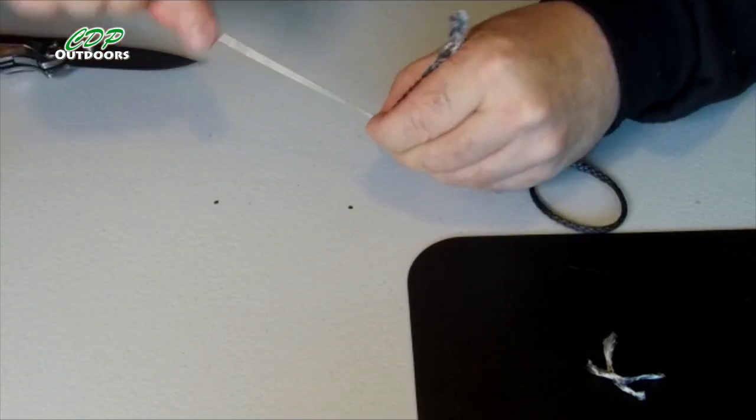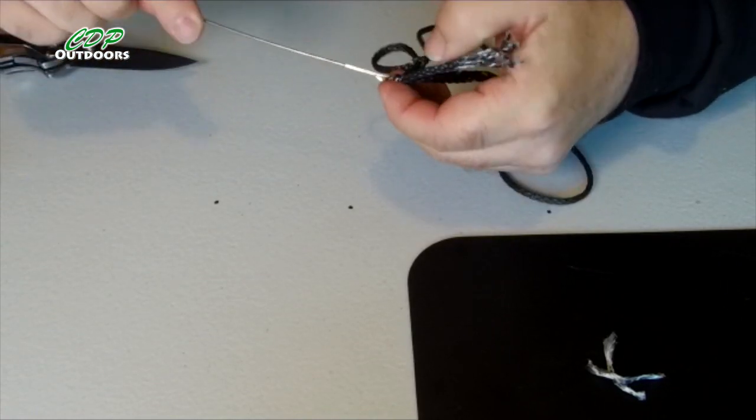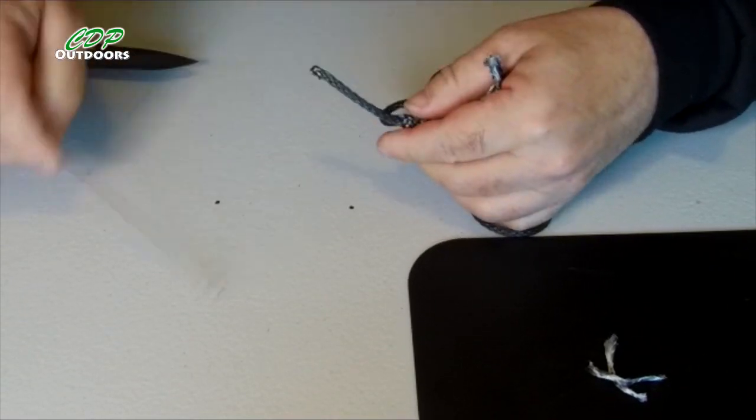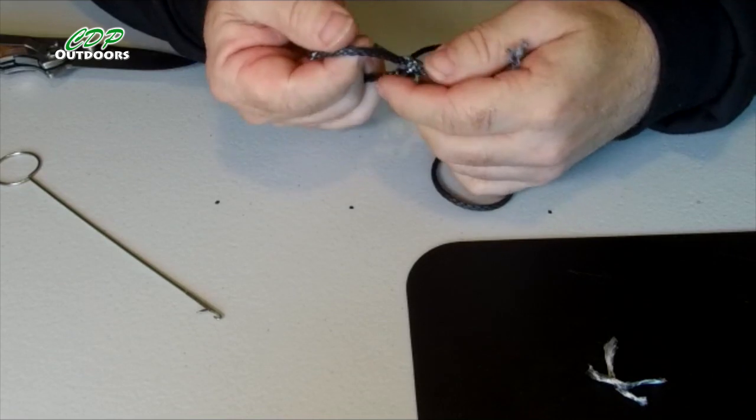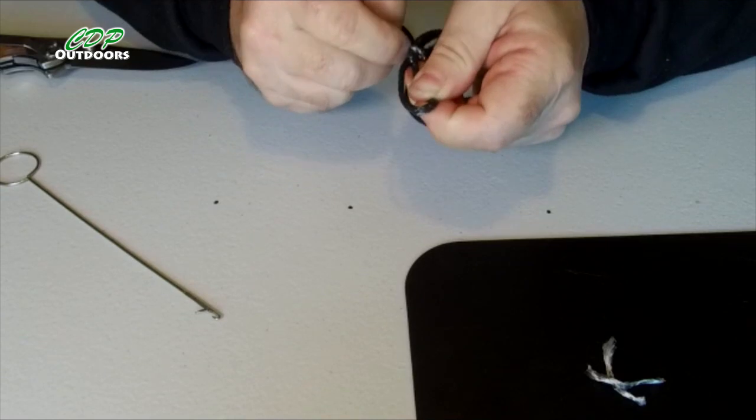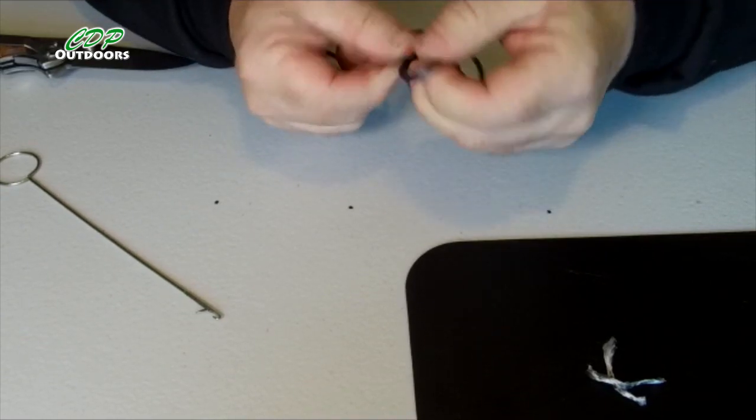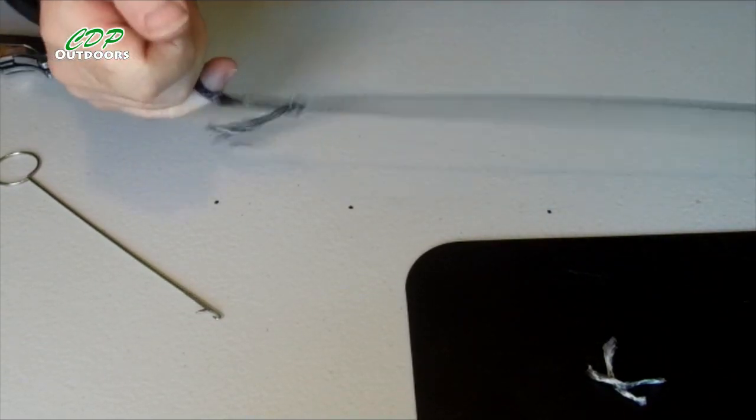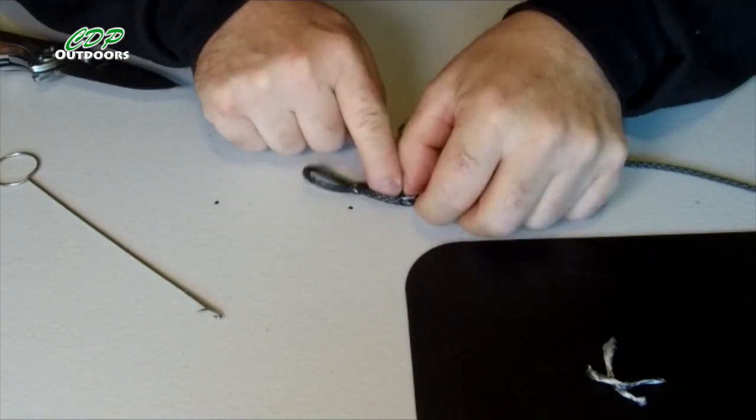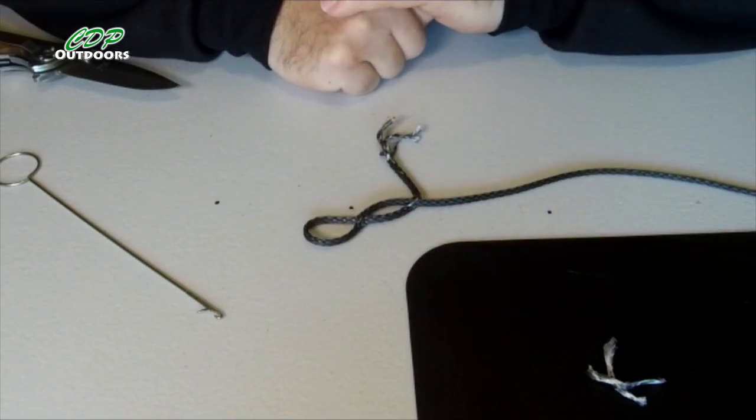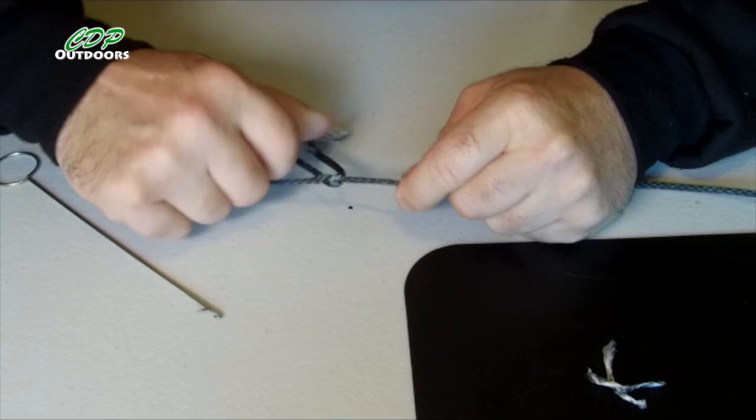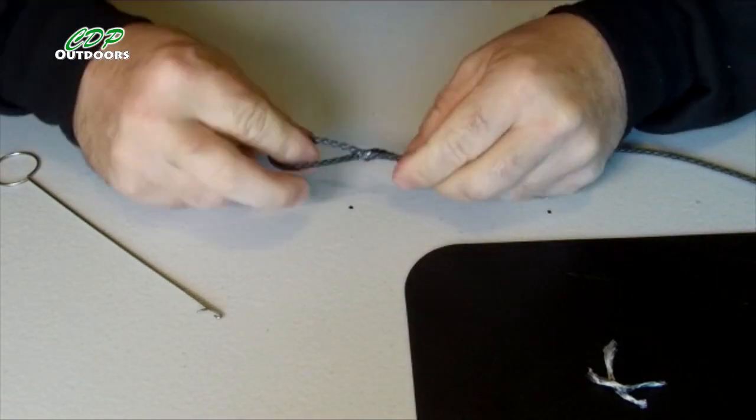This one's going to be a little bit more awkward, because you're bringing the whole loop through, which means it's a lot thicker. And there we go. And there, again, it's the blocked brummel. So we'll just pull that, again, tight. Which has made our loop.